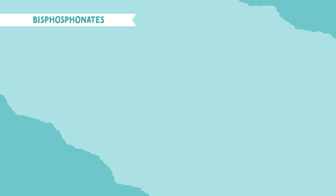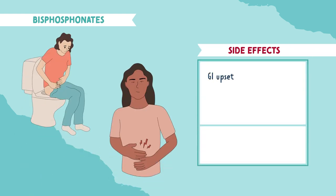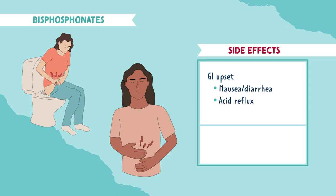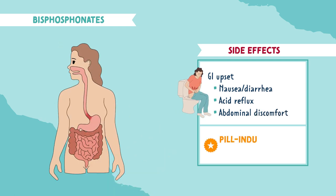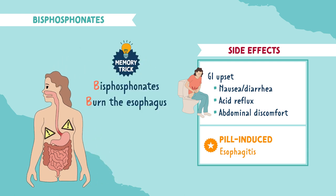Let's look at the most common side effects of this medication. GI upset is very common and can include nausea, diarrhea, acid reflux, and abdominal discomfort. Another side effect is pill-induced esophagitis, where the medication causes damage and inflammation to the esophagus. You can remember this with the memory trick: bisphosphonates burn the esophagus.